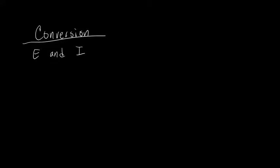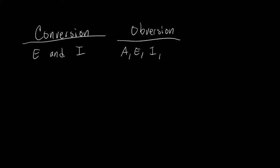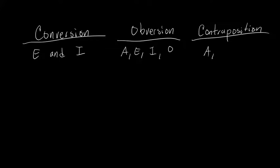Conversion will not work for A-type and O-type statements. So if you use conversion on an A-type, there's no guarantee that the statement you get out will be true, given that the original statement was true. For obversion, it turns out that all of them — A, E, I, and O — are valid inferences.